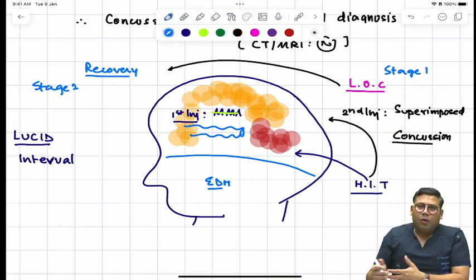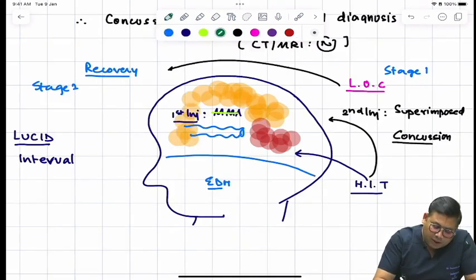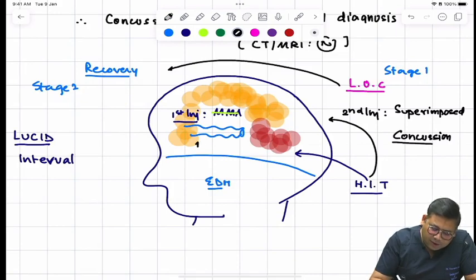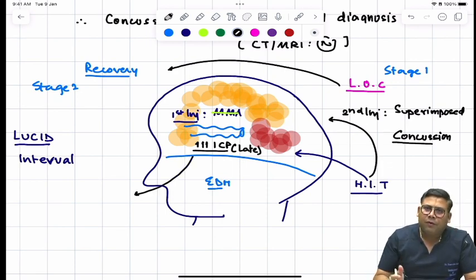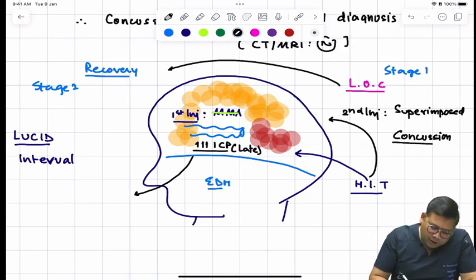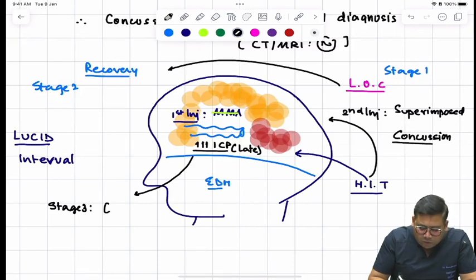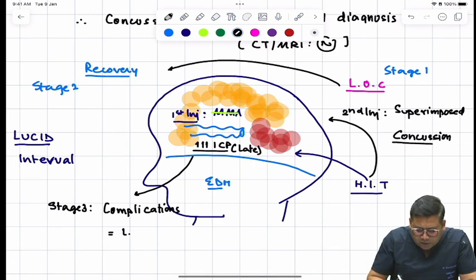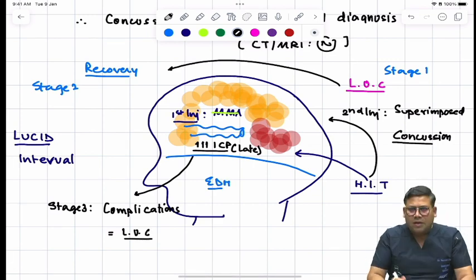And there will be a time when because of this hematoma, there shall be increase in the intracranial pressure in the late stages. And therefore, because of raised ICP, the CPP will fall, and therefore stage three will be the stage of complications. And this is very important because of complications. Now the patient will again have loss of consciousness.